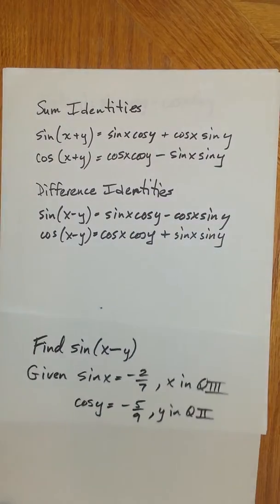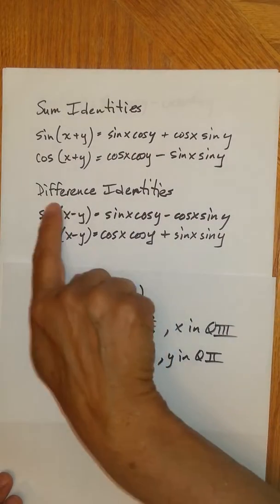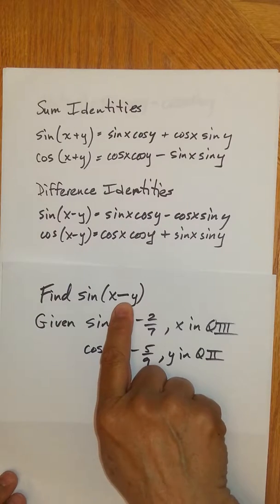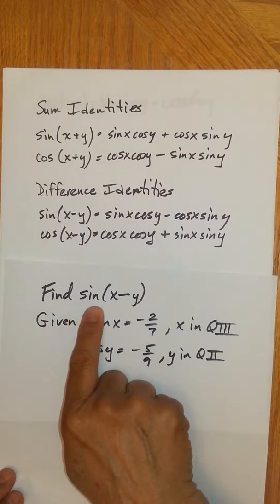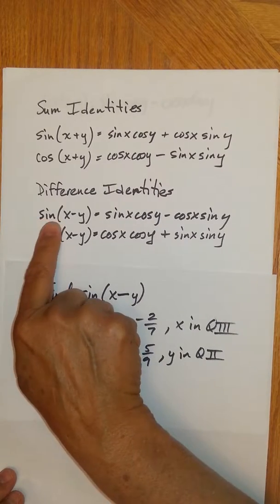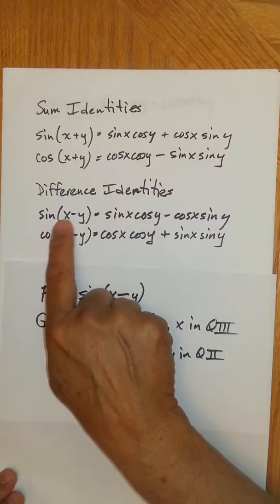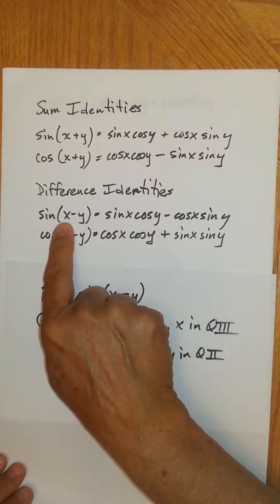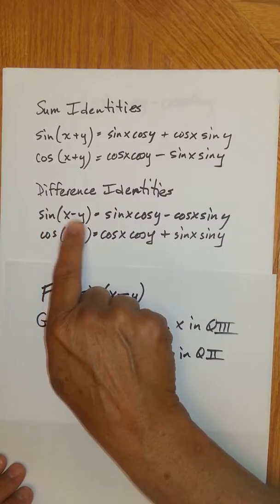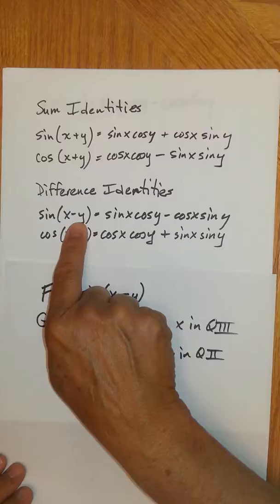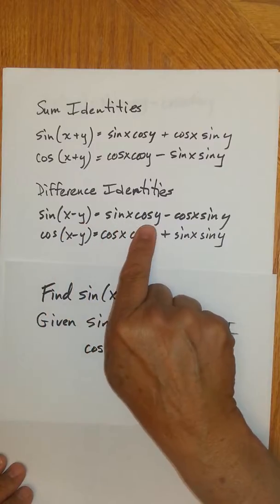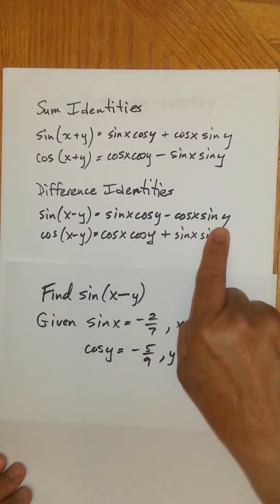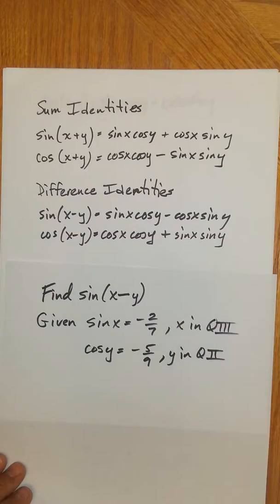Here are your sum and difference identities. You look under the difference identities because you have a minus sign, and then for the sine, it's this top one. Sine of x minus y — x being the first angle, y being the second angle — is sine of the first times cosine of the second, minus cosine of the first times sine of the second angle.